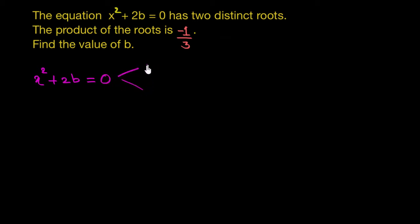So let's say the roots are mango and parrot. You can name them anything, it won't matter. The product of the roots is -1/3. So m times p is equal to -1 divided by 3.